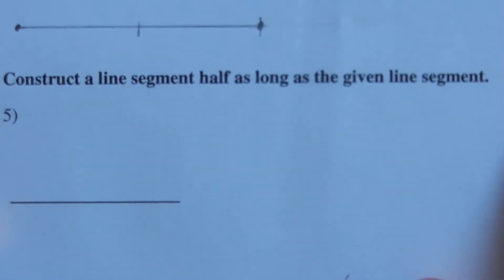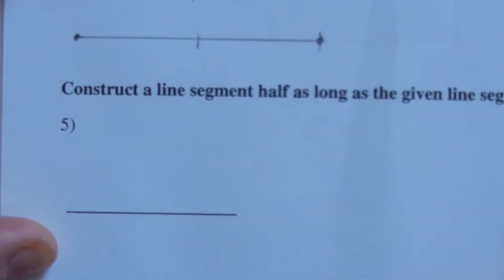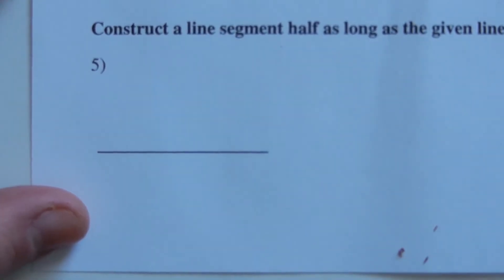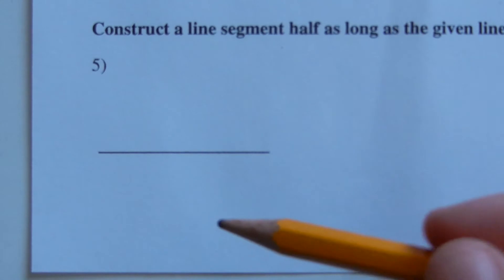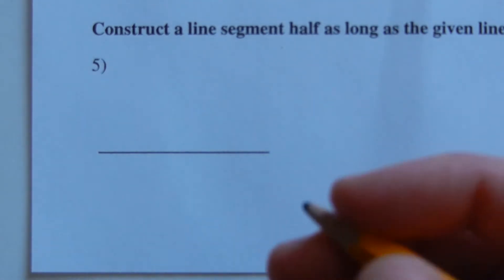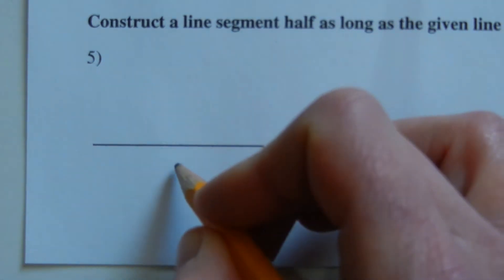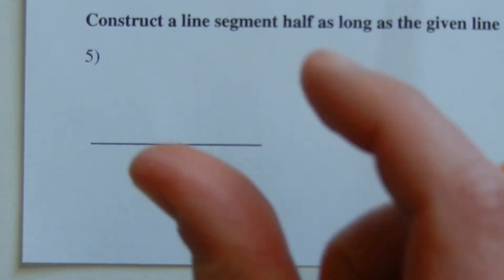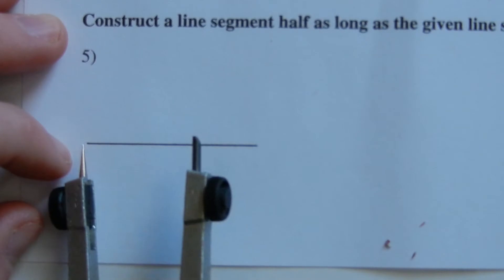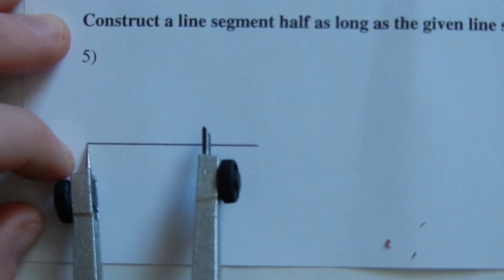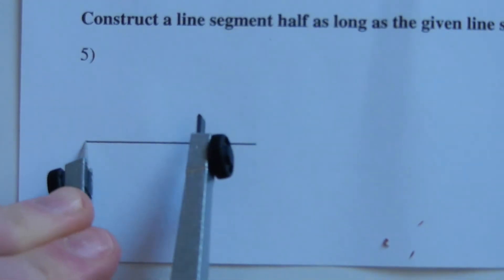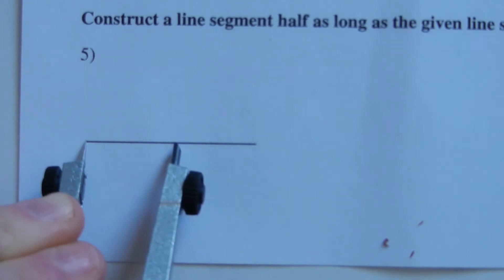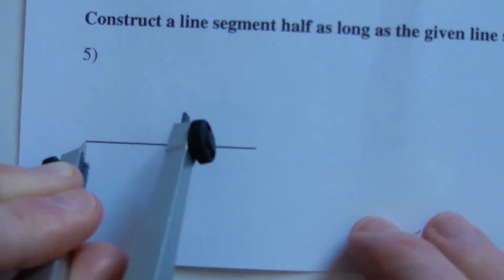Number five: construct a line segment half as long as the given segment. We're going to find the bisector of this line and take the measurement from the midpoint to the endpoint — that will be half as long. To create a bisector, we place one point of our compass on the endpoint and move the pencil point a little past what we believe would be halfway, then draw a mark above.